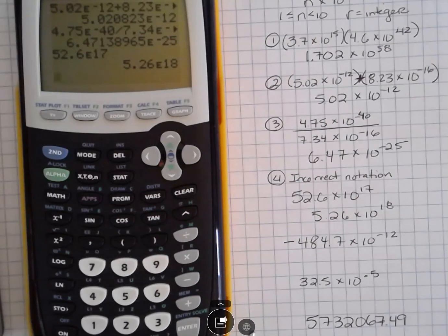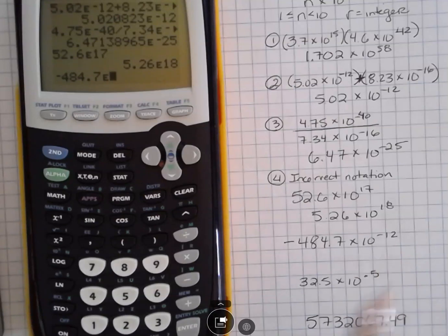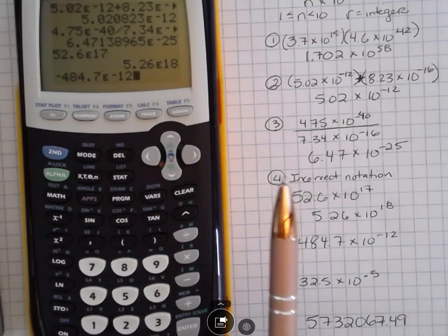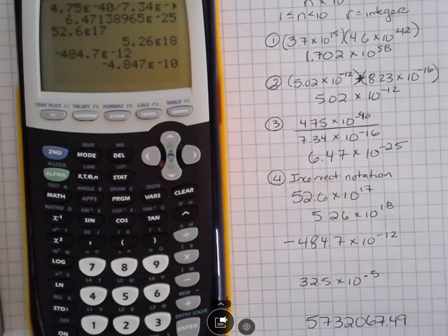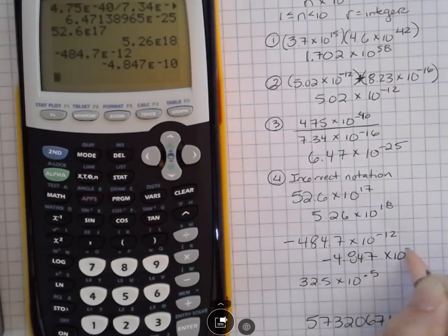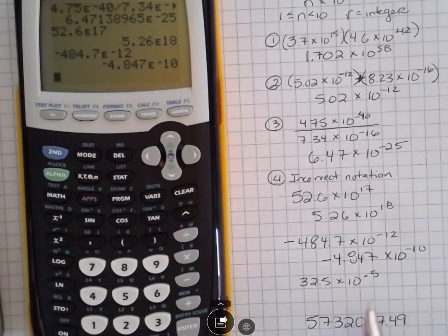We can do that one more time. Let's say I have negative 484.7 and second function EE to the negative 12th. I like negative 12 a lot in these problems that I see. Hit enter, and it's going to fix that for us. Negative 4.847 times 10 to the negative 10th because we needed to move that decimal point two places in that case.